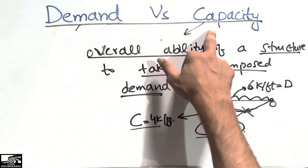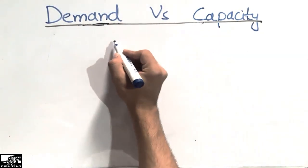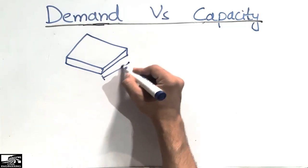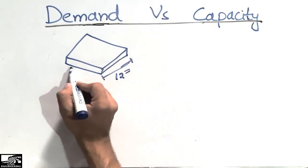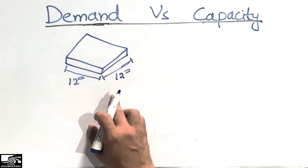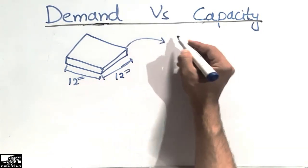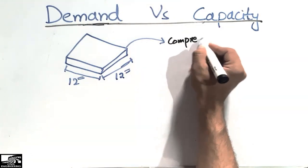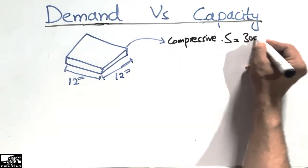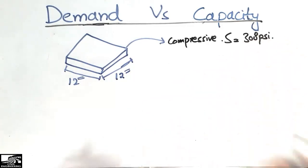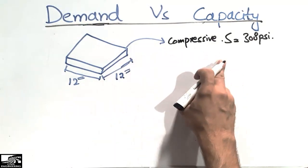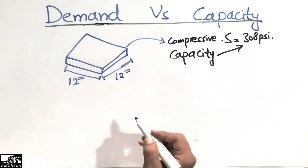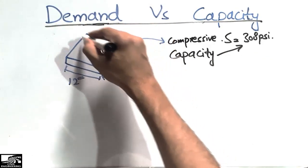Now I will explain these two terms by solving one example. Consider a concrete block with dimensions 12 inches by 12 inches — it is a square block of concrete. We assume the compressive strength of this concrete block is 3000 psi, or 3 ksi. This compressive strength is the capacity of the concrete block.